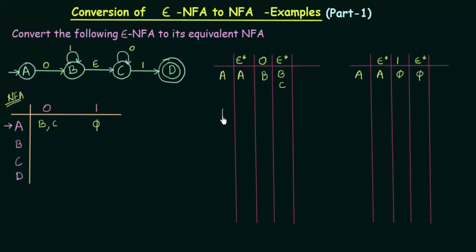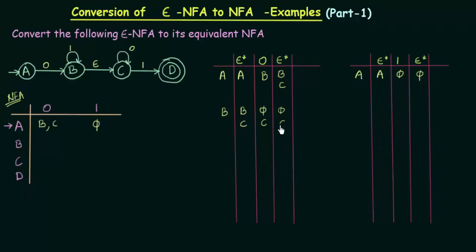Now let's come to state B. The Epsilon closure of B is B and C. B on input 0 goes nowhere — phi. C on input 0 goes to C itself, and the Epsilon closure of C is only C. So B on input 0 will go to C.